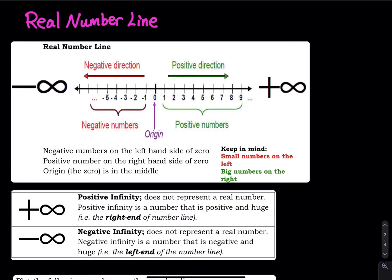On the right hand side: 0, 1, 2, 3, 4, 5, 6, 7, 8, 9, 10, so on and so forth. Tell me what is the biggest number on the right hand side — the biggest value. Can you write such a number on your paper? The answer is no, you cannot. So since we don't have such a number, we use positive infinity. Positive infinity represents a number that is positive and extremely large. Negative infinity represents a number that is negative and extremely large in magnitude.